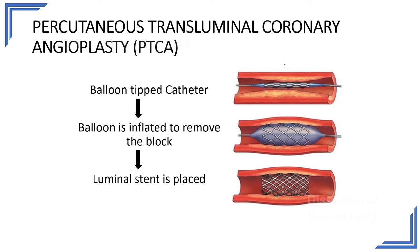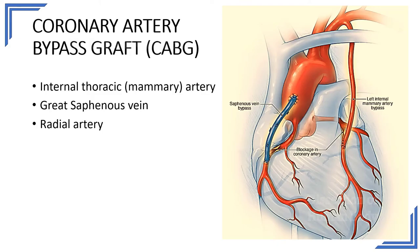Angioplasty may not be feasible in all conditions, such as severe obstruction and multiple vessel obstruction. In that case, the treatment of choice is cardiac bypass, or coronary artery bypass graft. This is a procedure where blood vessels — veins or arteries from other sites — are harvested and used to bypass the obstruction. For example, there may be obstruction in the right coronary artery and in the left anterior descending artery, which is the most common site of block. The great saphenous vein and the internal thoracic (internal mammary) artery — a branch of the first part of the subclavian artery — are commonly used. Other vessels of choice include the radial artery.